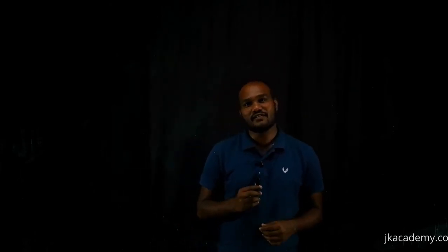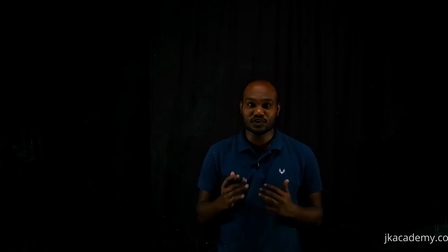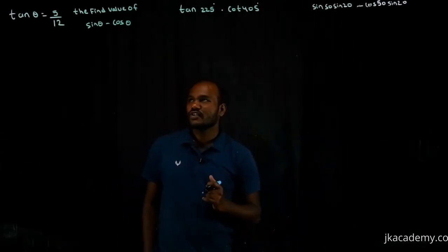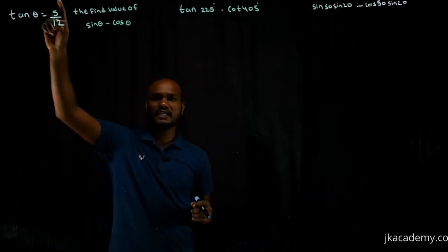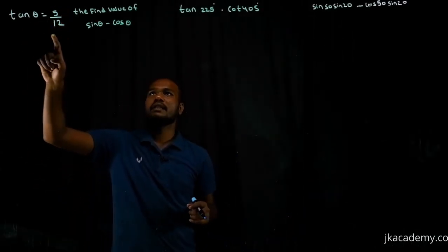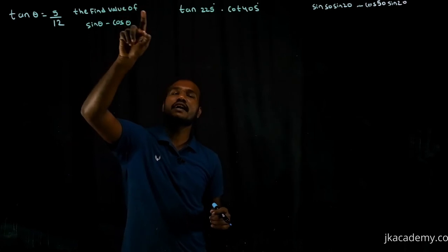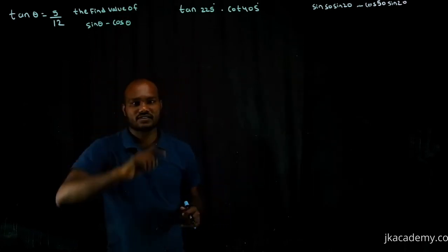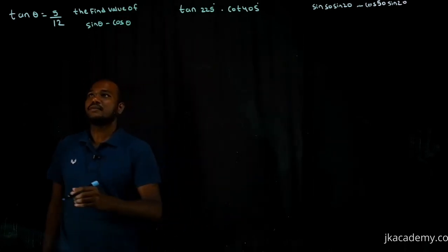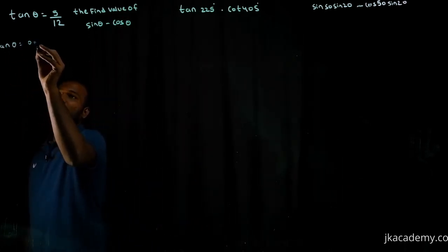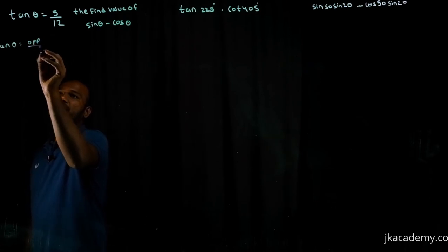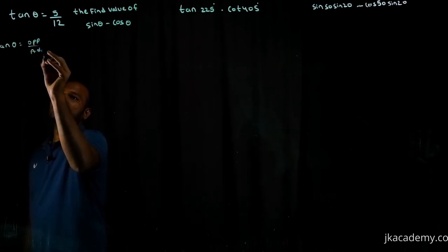Let's start with the first question. What is it? tan θ is given as 5/12. So find the value of sin θ minus cos θ. We know that tan θ equals opposite over adjacent.